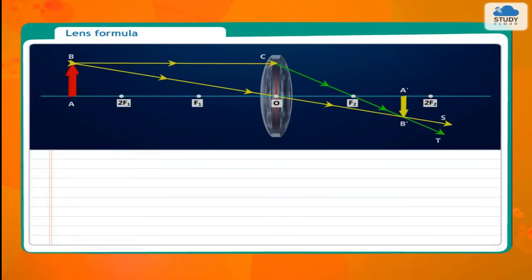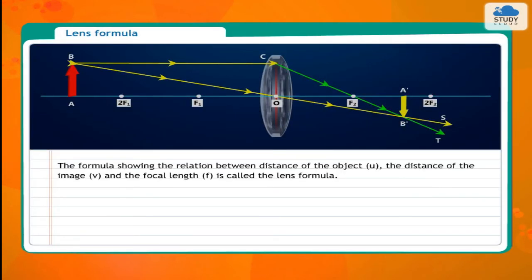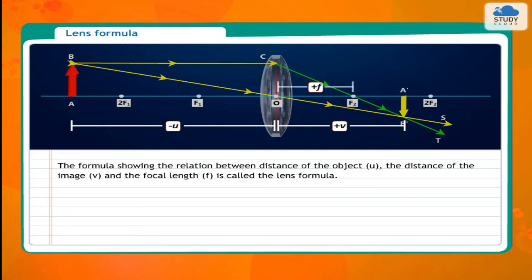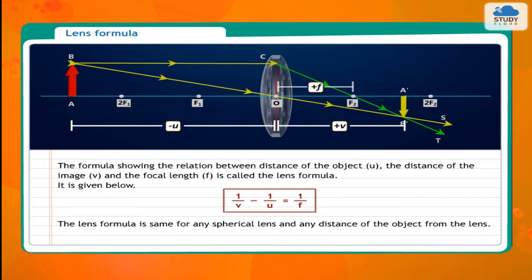The lens formula shows the relation between the distance of the object U, the distance of the image V, and the focal length F: 1/V − 1/U = 1/F. The lens formula is the same for any spherical lens and any distance of the object from the lens; however, it is necessary to use the sign convention properly.